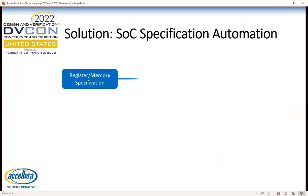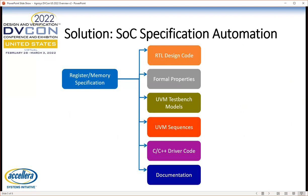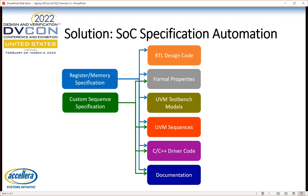Let's describe the steps we have available today. We started the company using register and memory specifications that were executable and could be used to automatically generate the design code for those registers and memories, formal properties to verify them in formal verification tools, the models and sequences used in simulation UVM test benches, the driver code written by the embedded team to manipulate those registers and memories, and documentation to be shared across the project team. We next introduced the ability to specify custom sequences — for novel register designs or other portions of your design. You can describe a sequence; we can generate formal properties to check that sequence, sequences that run in the test bench, sequences included in C++ code, and appropriate documentation.